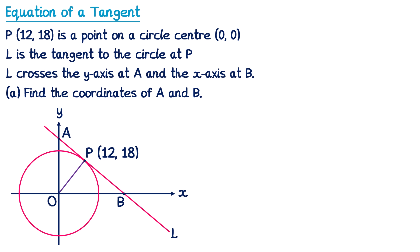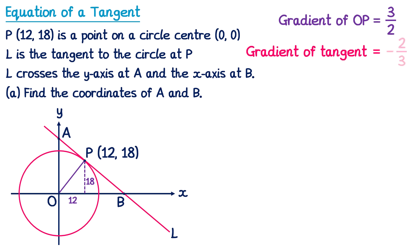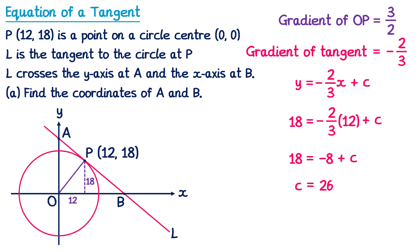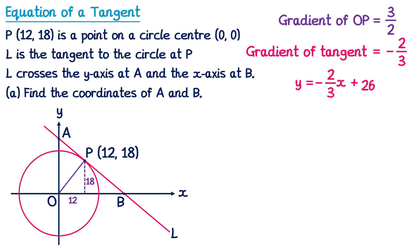We want the gradient of OP. Drawing in a gradient triangle, the change in Y is 18 and the change in X is 12. So the gradient of OP is 18 over 12, which simplifies by dividing by 6 to 3 over 2. So the gradient of the tangent is the negative reciprocal: negative 2 over 3. We write out the general equation of a line and replace M with negative 2 thirds. Substituting in the coordinates of P, X is 12 and Y is 18: 18 equals negative 2 thirds of 12 plus C. Negative 2 thirds of 12 gives negative 24 over 3, which simplifies to negative 8. Adding 8 to both sides, C equals 26. So we replace C in the equation with 26 and we've found the equation of the tangent.